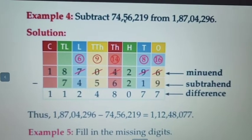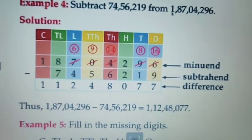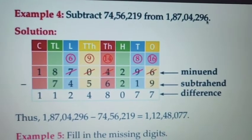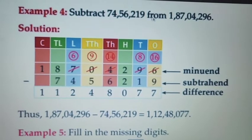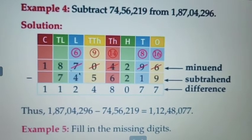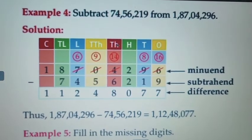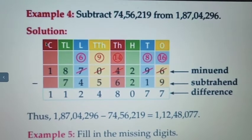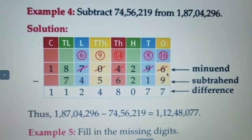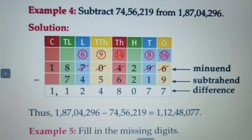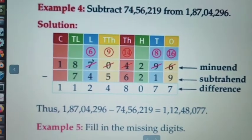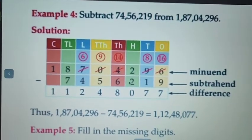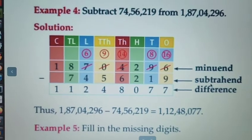Subtract 74,56,219 from 1 crore 87,04,296. So the from-after number we have to write first. Before that, write the place value and write numbers in columns, then place the numbers. Then the next number. The upper bigger number is called the minuend, and which number is to be subtracted, that is called subtrahend.